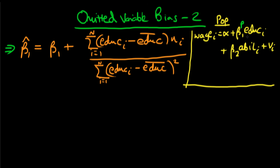In the population there is some process whereby an individual's level of wages is determined by their level of education and their level of ability, which we've neglected to include in this regression. So the error term U_i in our formula for beta_1_hat is implicitly containing an individual's level of innate ability.